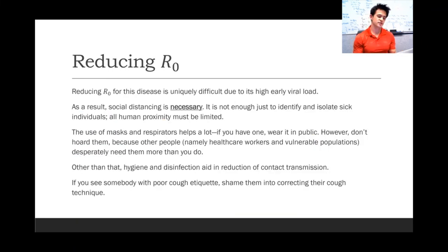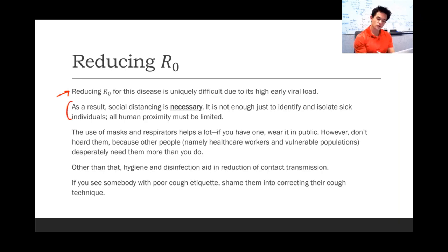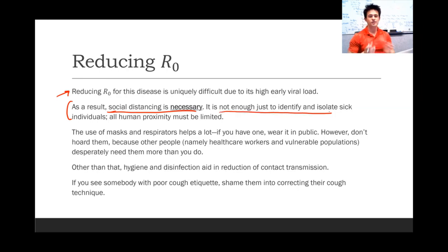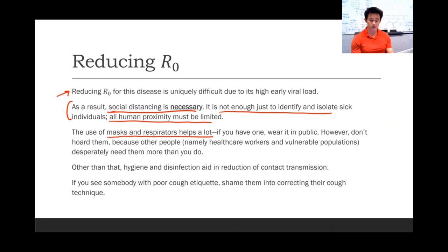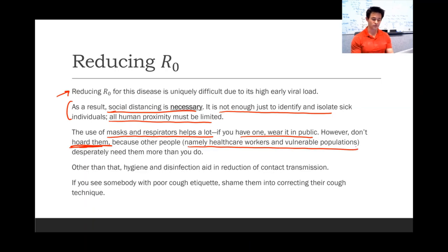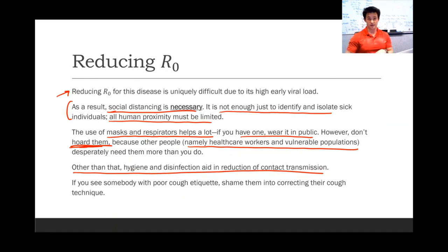Some people have suggested that with such a high virion concentration, transmission may be possible without coughing — just by breathing. Because of all this, reducing R-naught for this disease is uniquely difficult due to its high early viral load. As a result, social distancing is necessary — we have to stay away from each other. It's not just enough to identify sick people and isolate them; all human proximity has to be limited. The use of masks and respirators helps a lot — if you have one, wear it. However, do not hoard them, because healthcare workers and vulnerable populations desperately need them. Hygiene and disinfection will also aid in the reduction of contact transmission.